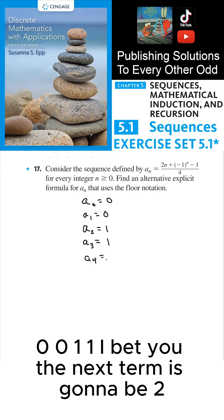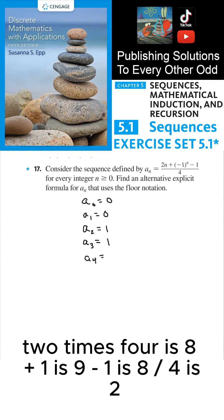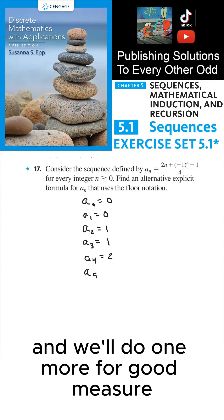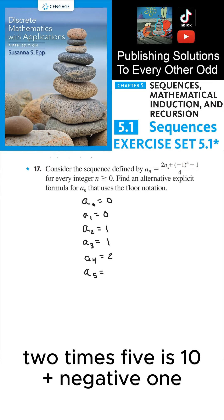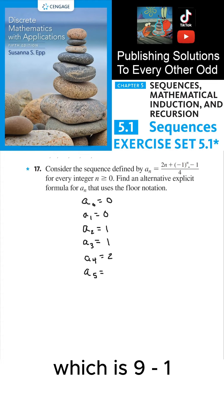I bet the next term is going to be 2, but let's double check. 2 times 4 is 8, plus 1 is 9, minus 1 is 8, divided by 4 is 2. And we'll do one more for good measure: 2 times 5 is 10, plus (-1), which is 9, minus 1, which is 8, divided by 4, which is 2.